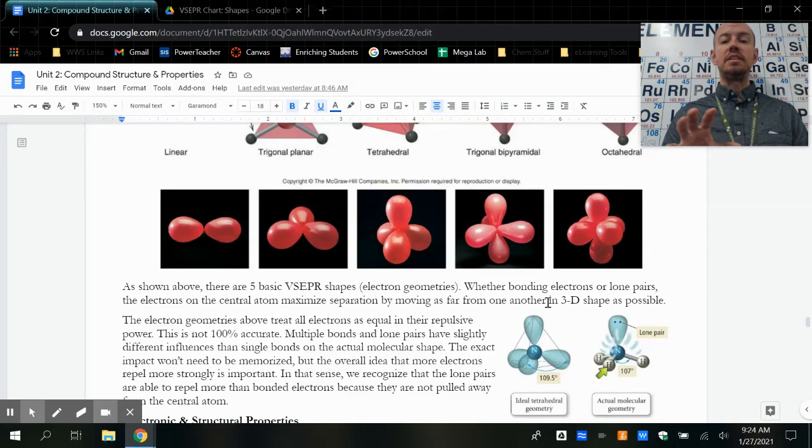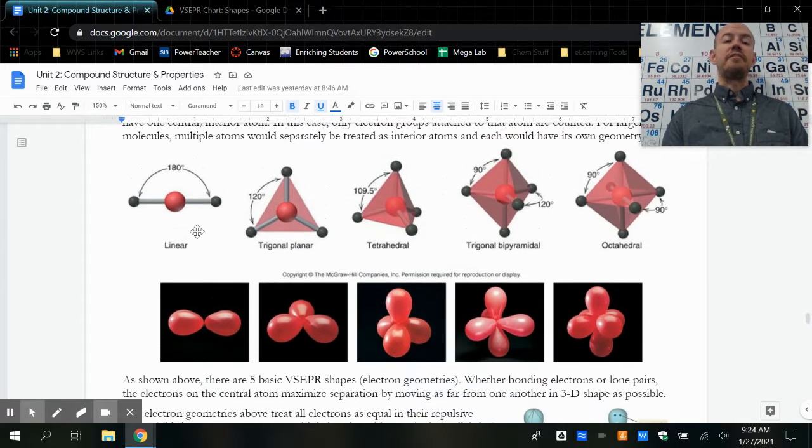So there are five basic shapes or five electron geometries. If I've got two, three, four, five, or six things on my central atom - we won't really talk about seven because that's so rare and in practical purposes impossible to do. And if I just have two atoms bonded, those by definition have to be linear.